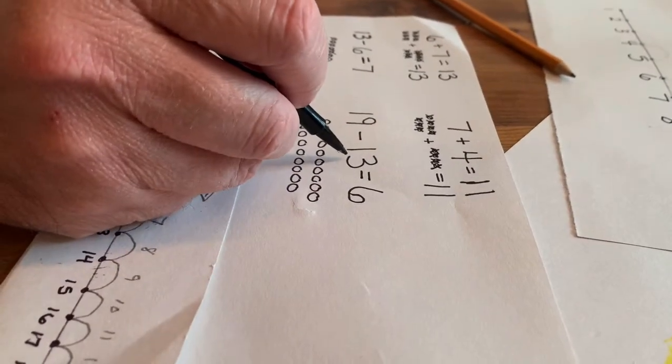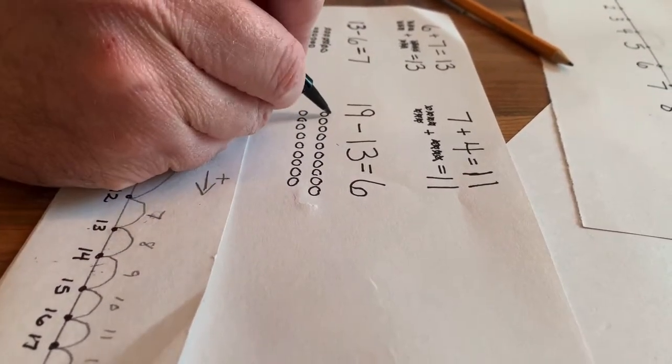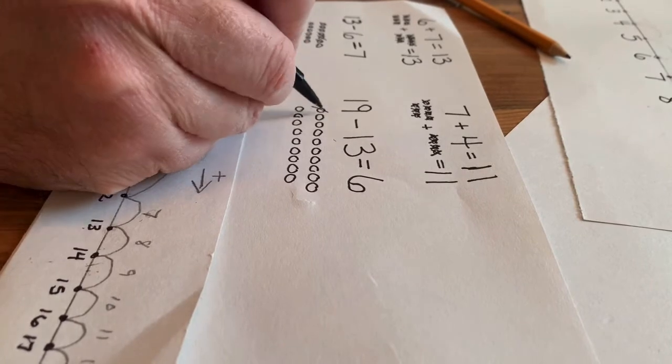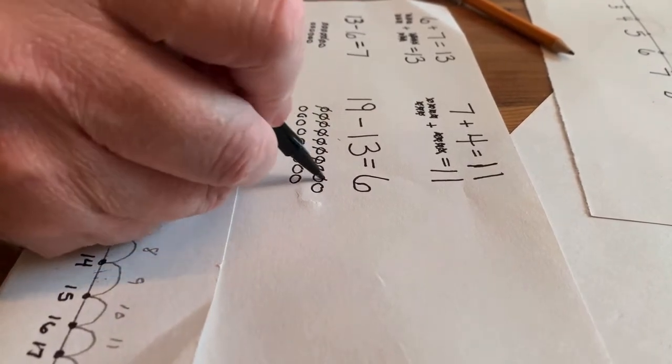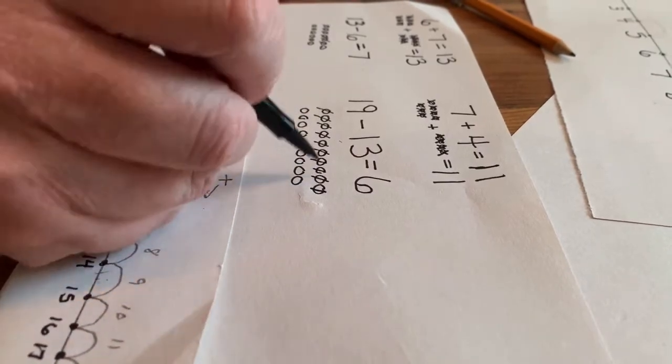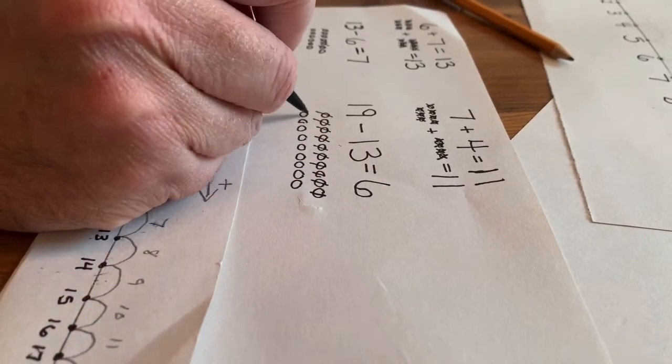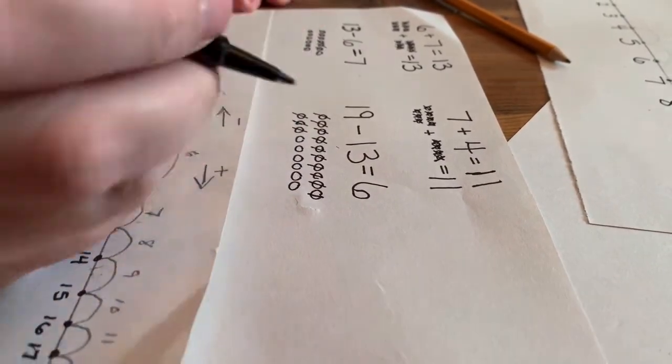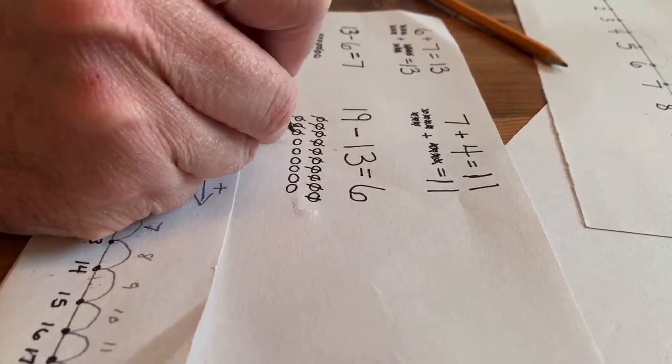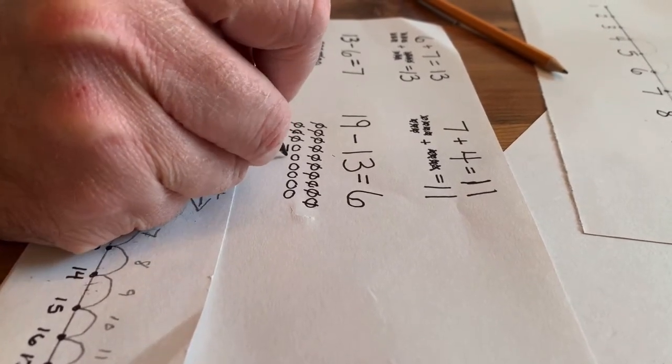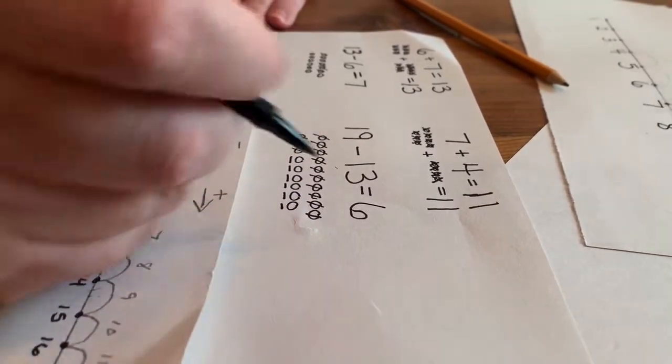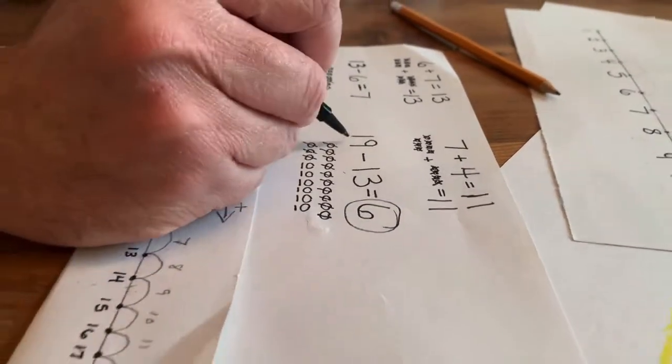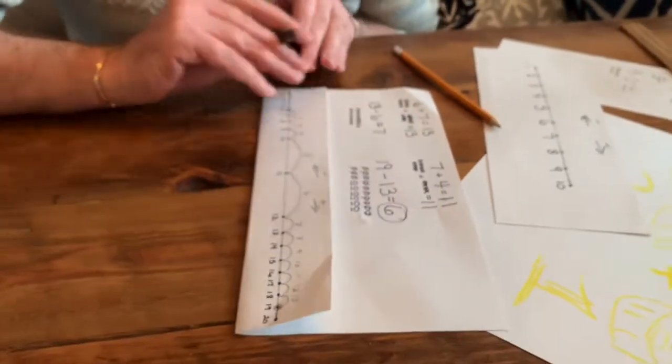Now I'm going to count out. I'm going to cross out 13. 1, 2, 3, 4, 5, 6, 7, 8, 9, 10. I knew there's 10 in that row. So I went up to 10, 11, 12, 13. Let's see how many I have left. 1, 2, 3, 4, 5, 6. So I have 6. So 19 minus 13 is 6.